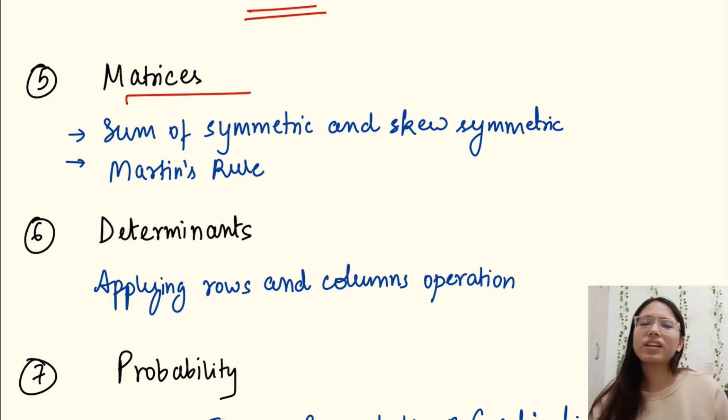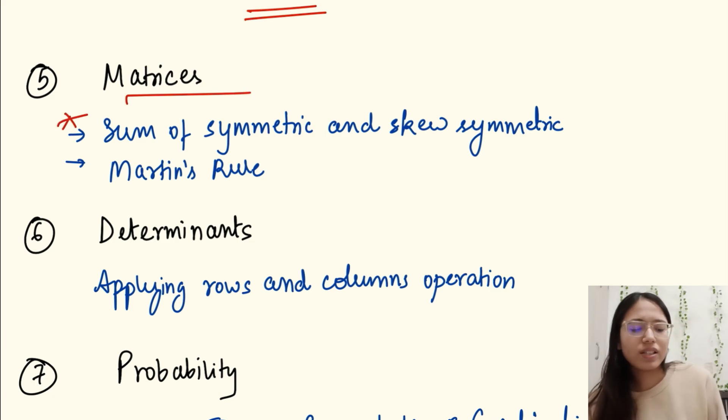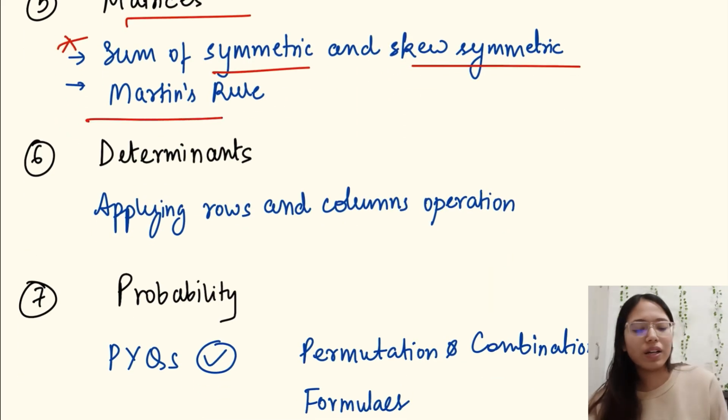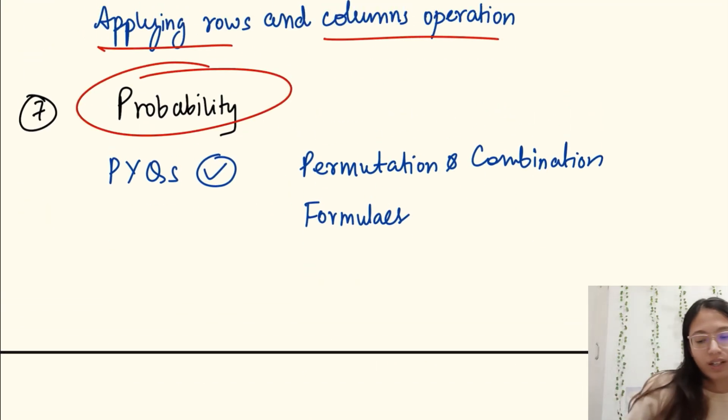Next is matrices, again a very simple topic. Determinants and matrices important questions: there are some of symmetric and skew symmetric, then Cramer's rule, applying rows and columns operation. You have to practice it. Probability, I have seen people are not able to solve questions on this because your basics are a little bit weak.